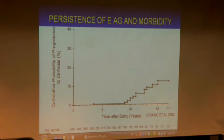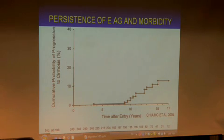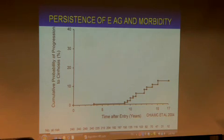These patients who remain e-antigen positive after age 40 tend to develop liver cirrhosis progressively. So if you see a patient who is e-antigen positive at an older age — say 40 — and the ALT is high, you have to treat the patient. If the ALT is normal, there is debate about how to proceed, but a patient who is e-antigen positive at a significantly older age needs to be worked up more thoroughly.